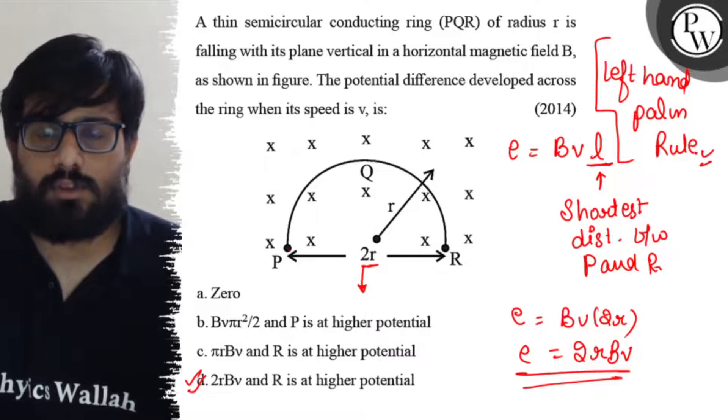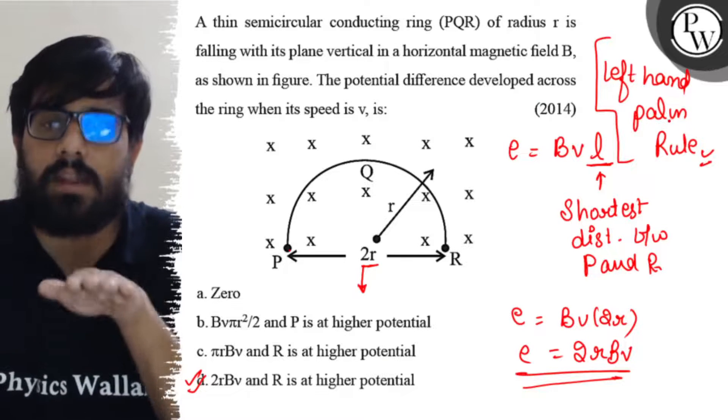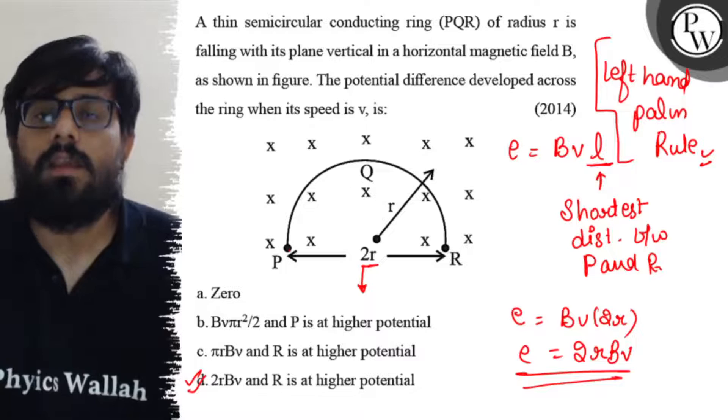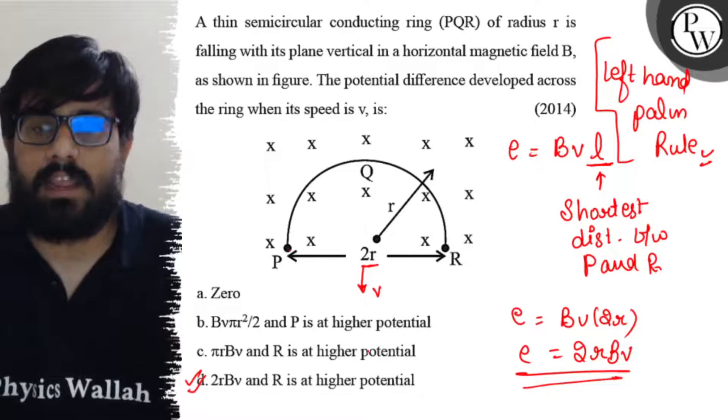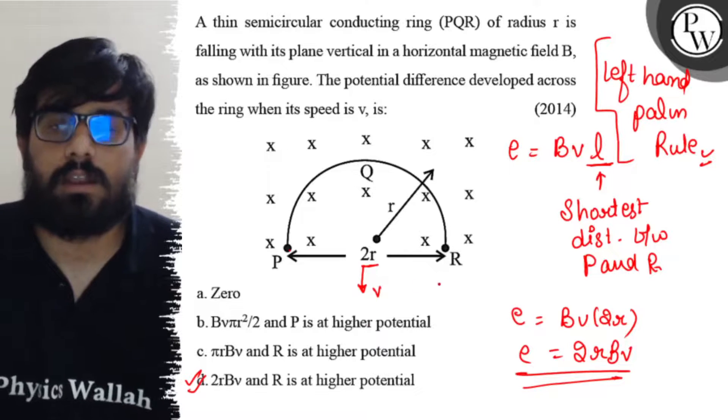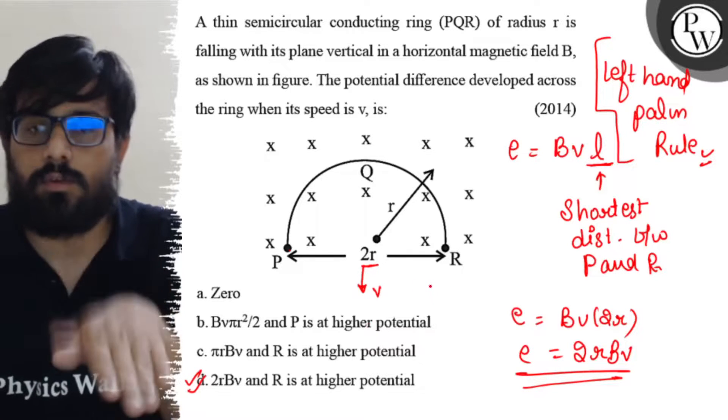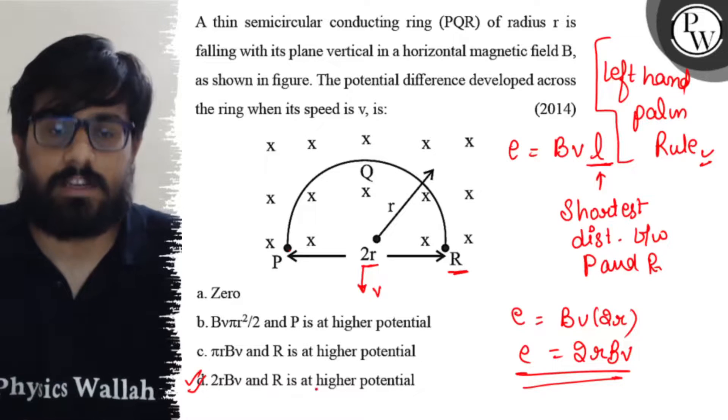Using the left-hand palm rule: fingers point in the direction of the magnetic field, palm faces the direction of velocity, and the thumb points toward higher potential. Looking at the diagram, R is at higher potential.